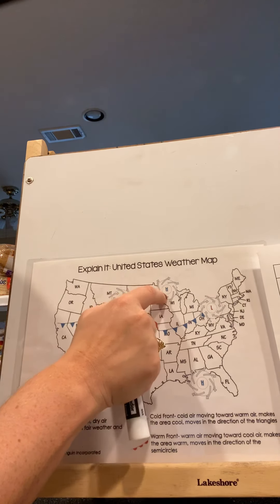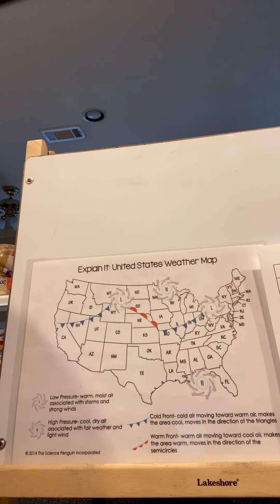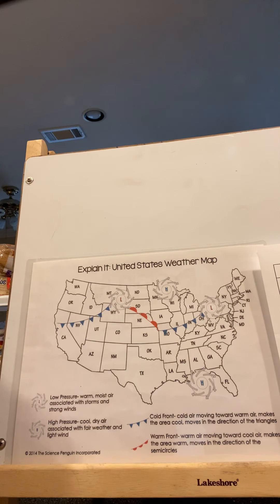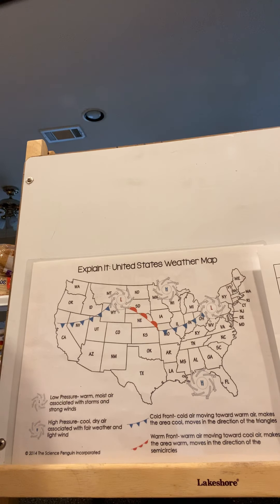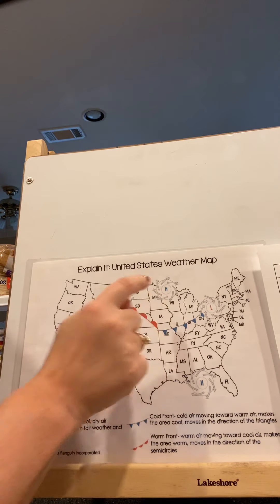High pressure is the opposite. High pressure is a blue H, and this is when it's cool, dry air that gives us fair weather and light wind. Fair weather means it's good out — nice outside, sunny, clear skies. I teach my students it must be a happy day. I really like when it's clear skies and not too many clouds, and that is generally associated with high pressure.